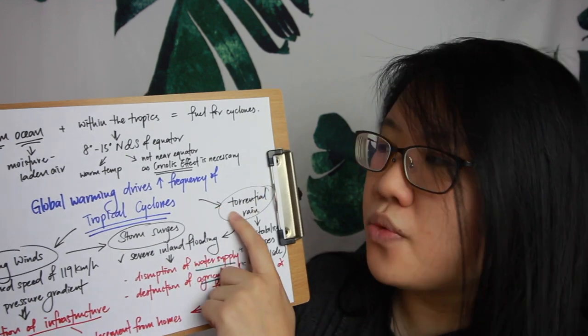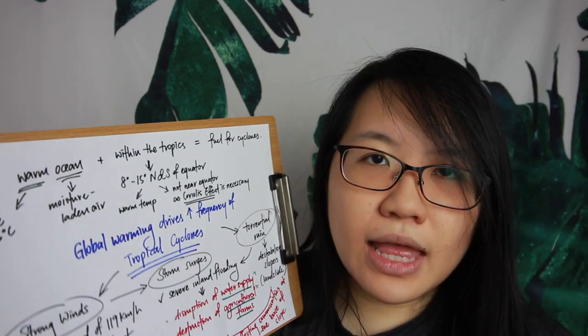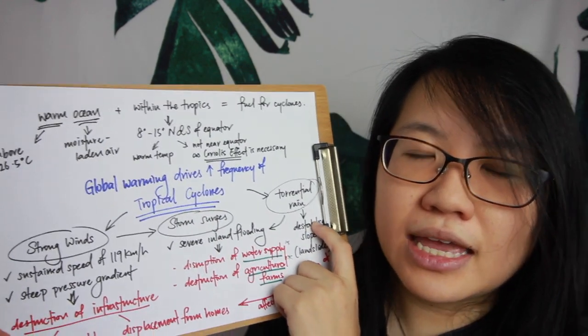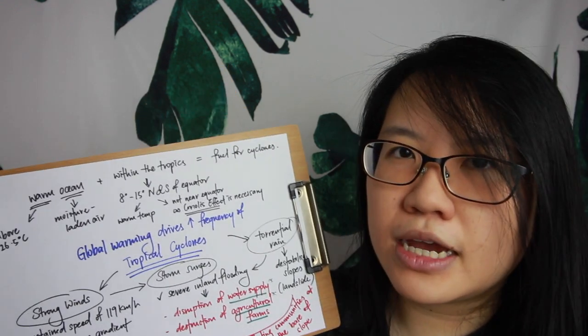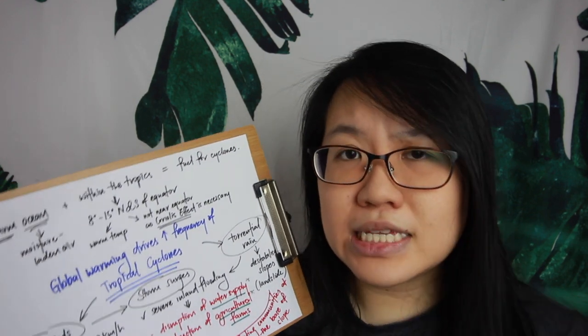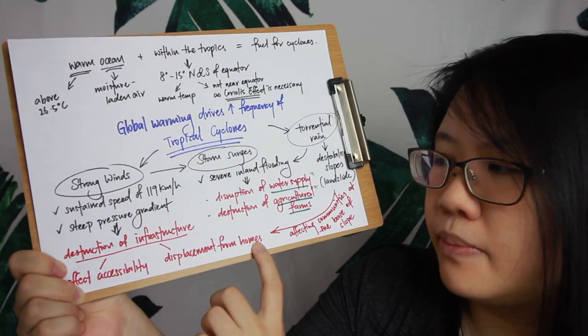Torrential rain is the third major characteristic. Since tropical cyclones form over warm ocean waters, the air is moisture-laden, bringing torrential rain at landfall. This can lead to severe inland flooding — for example, a nearby river may overflow and worsen flooding. In mountainous regions, torrential rain can destabilize slopes, causing landslides that affect communities at the base, resulting in high death tolls and displacement.